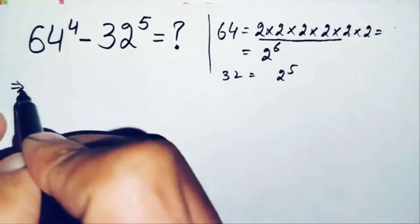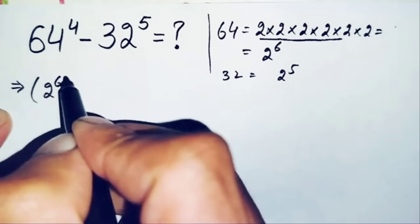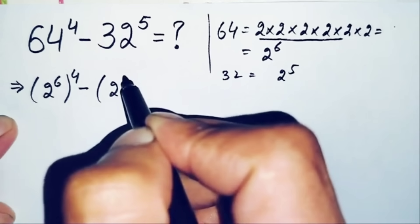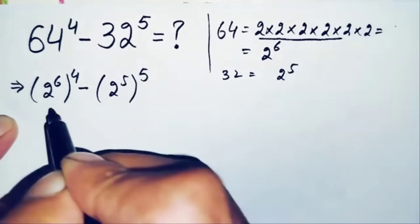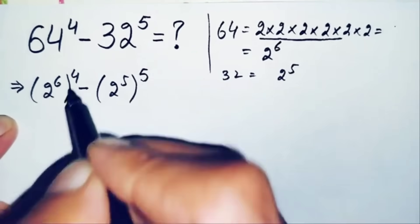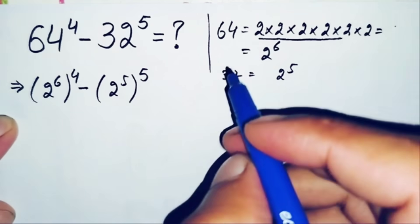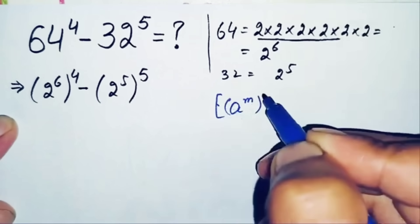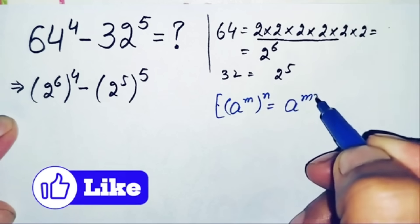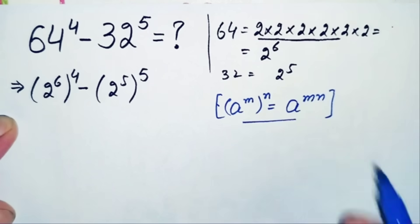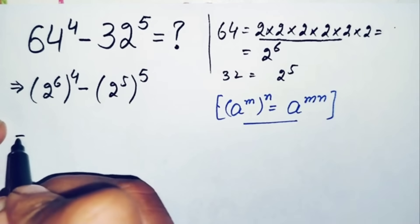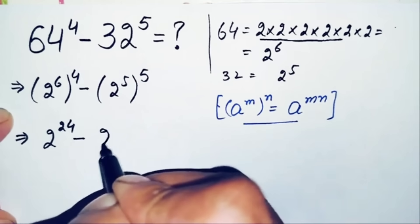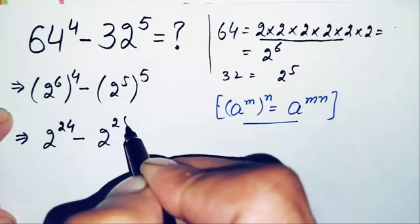The equation becomes (2^6)^4 minus (2^5)^5. We will use the exponential property (a^m)^n = a^(m×n) on both terms. Applying this property, the first term becomes 2^(6×4) = 2^24, and the second term becomes 2^(5×5) = 2^25. So the expression is now 2^24 minus 2^25.